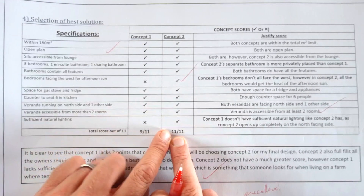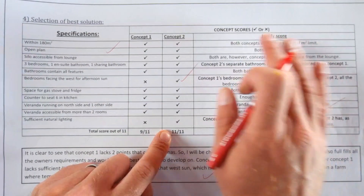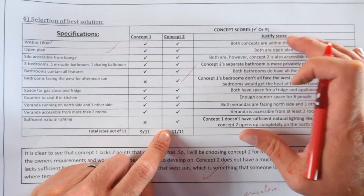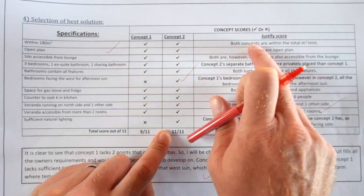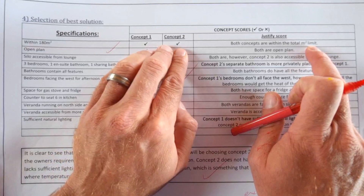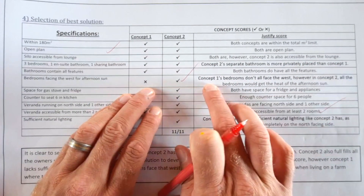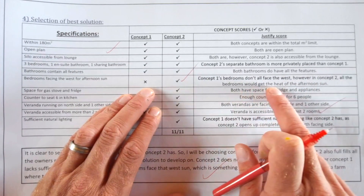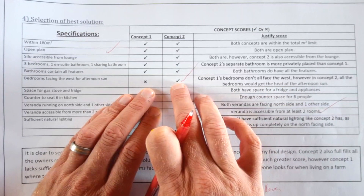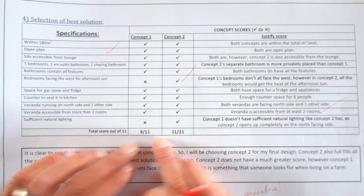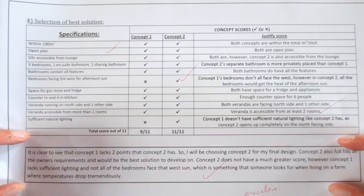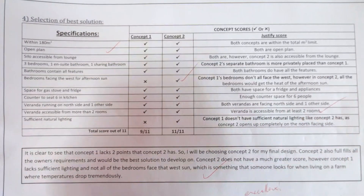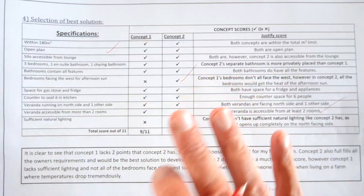On the right-hand side you have to justify your score. You can do it with headings, which helps you keep your information correct. For example: both concepts were within the total square meter limit, so both got their marks. Concept one didn't have all bedrooms facing west, however in concept two all the bedrooms would get the heat of the afternoon sun and that's why the requirement was met. Just a short description with your total score, and at the end a comprehensive summary of your final thoughts on the selection process. If you do it in this simple format, you are absolutely going to nail this.